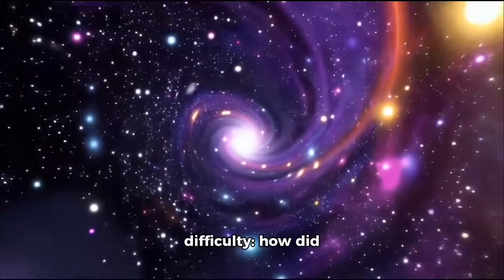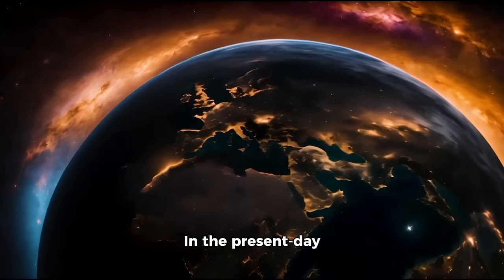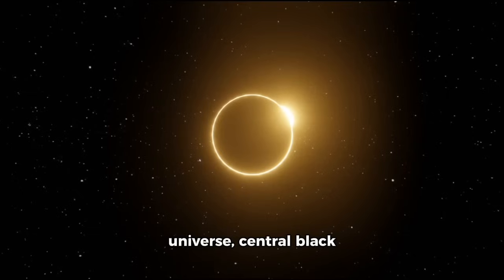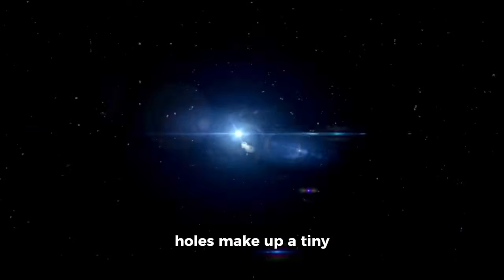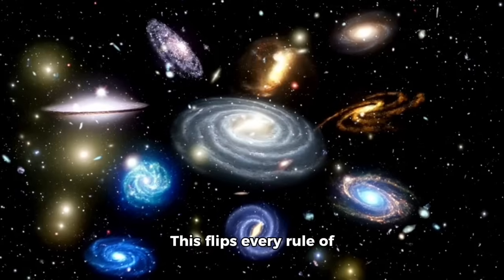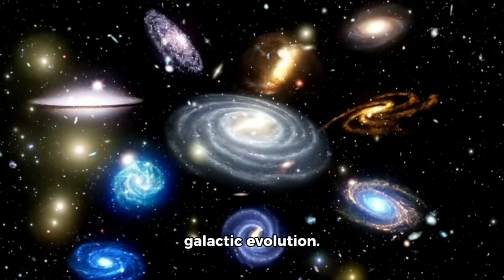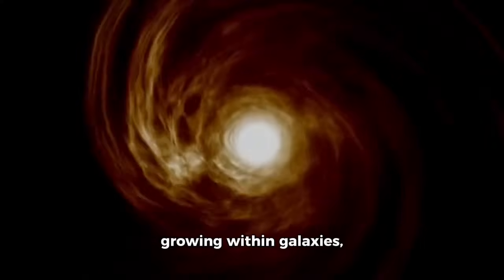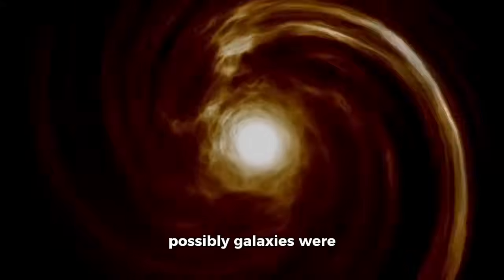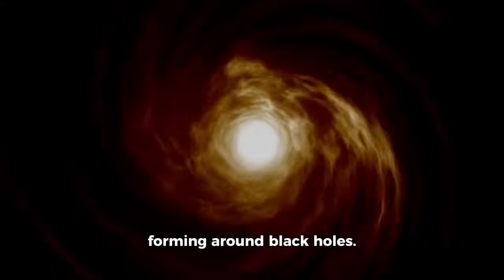How did these black holes form so quickly? In the present-day universe, central black holes make up a tiny fraction of a galaxy's mass. But in these ancient red dots, the black holes accounted for nearly all the mass. This flips every rule of galactic evolution. Instead of black holes growing within galaxies, possibly galaxies were forming around black holes.